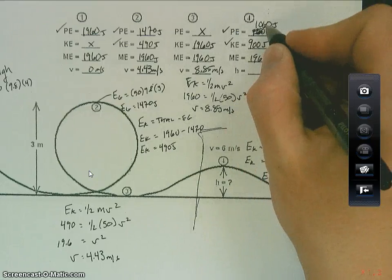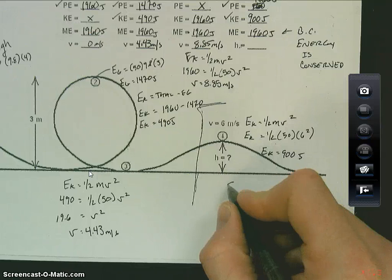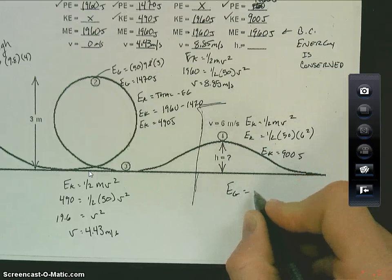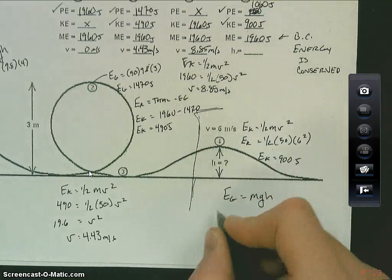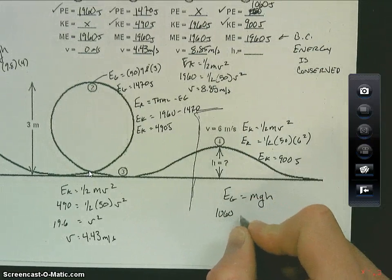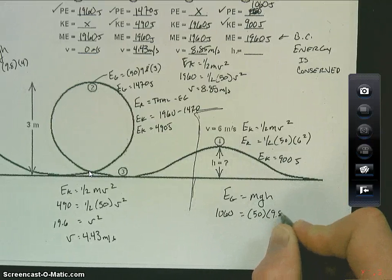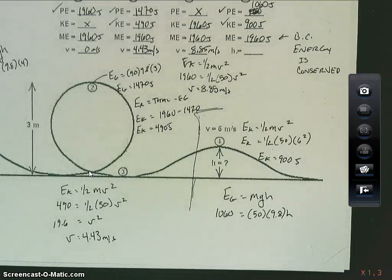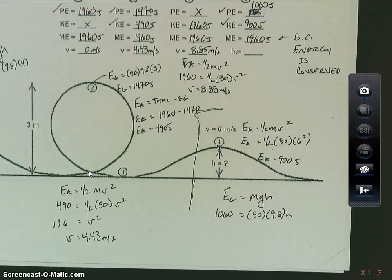And so I know that all of this potential energy then equates to that height. So if I know my EG to be MGH, I can substitute my values, 1060 here is equal to the mass 50 times 9.8 times the height that that object is, which is what we're solving for. So 1060 divided by 50, divided by 9.8 gives me a height of 2.16. We'll round that to 2.2 meters.